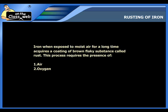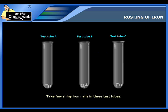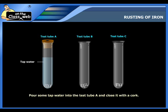Let's see how rusting of iron happens. Take few shiny iron nails in three test tubes and label them as A, B and C respectively. Pour some tap water into the test tube A and close it with a cork.